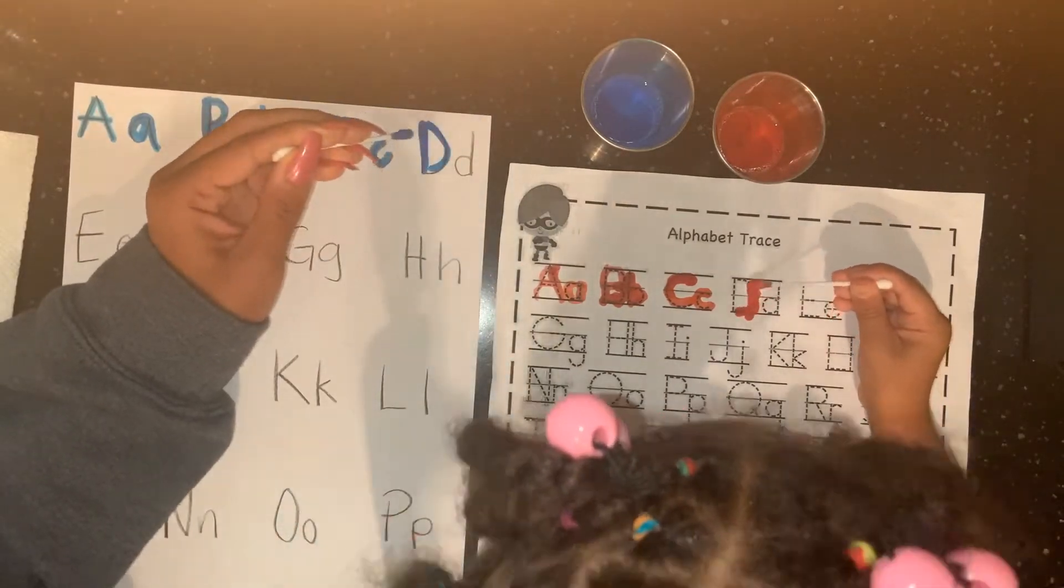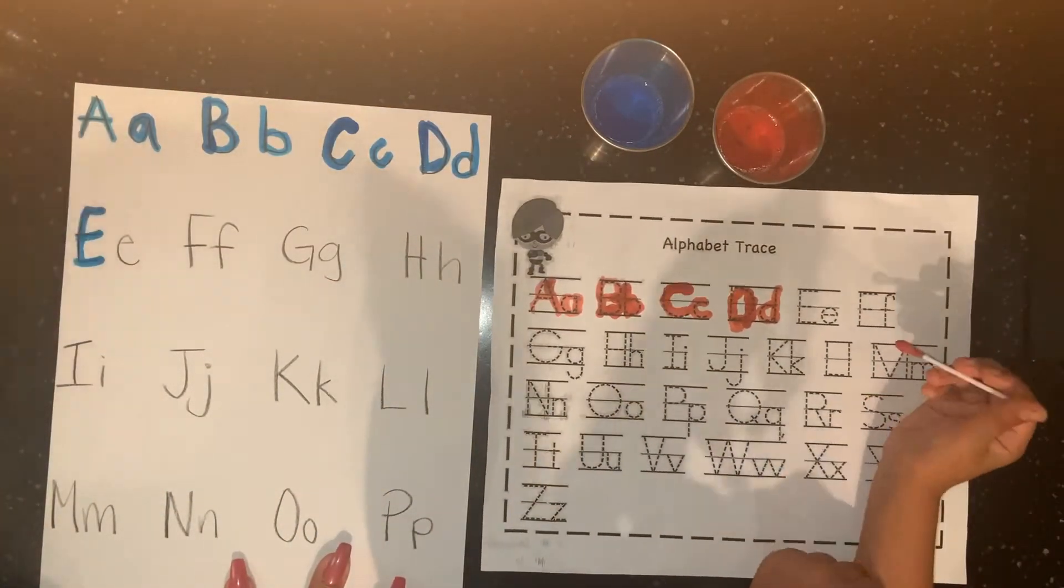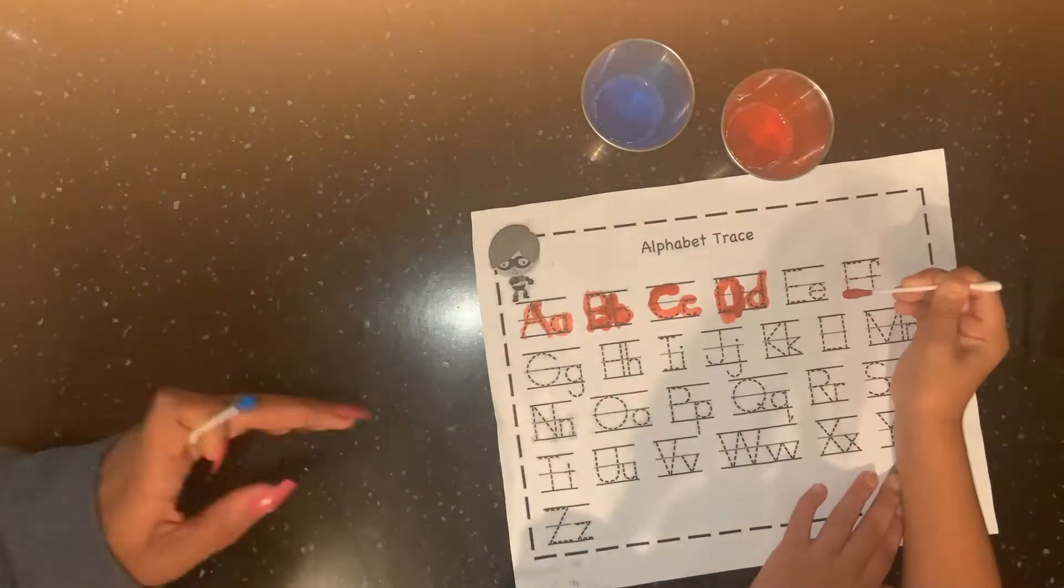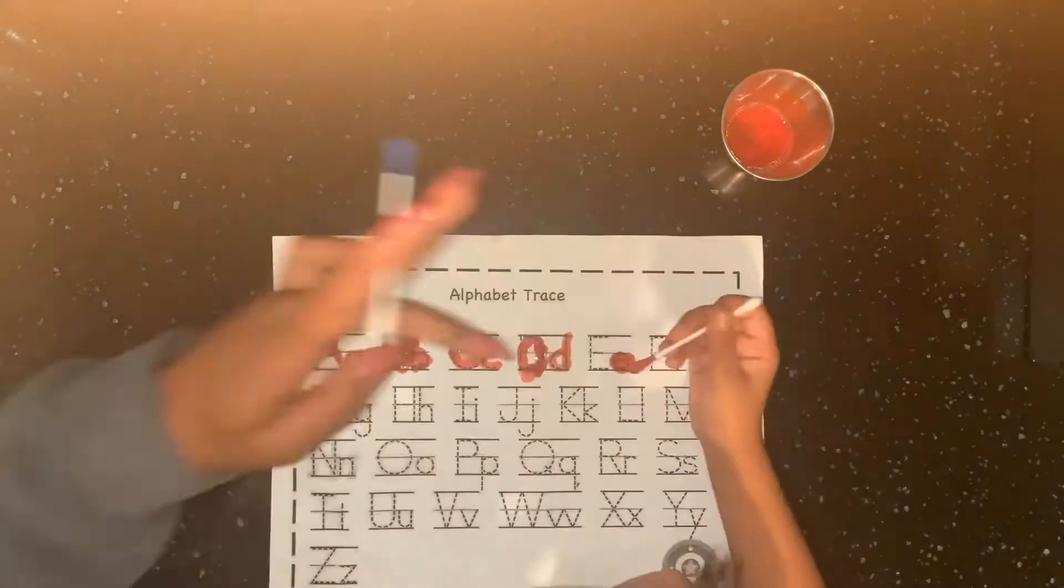I have started tracing my alphabet in blue. Naomi is going to start in red. I am going to step aside and allow Miss Naomi to trace her letters on camera.